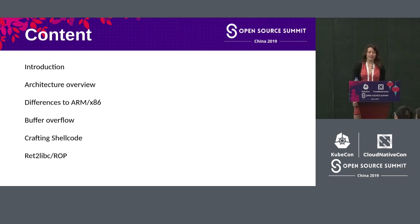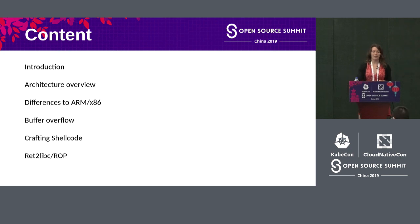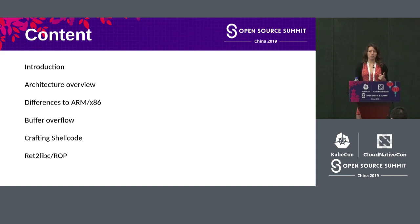Here's what I'll be covering. After the introduction I'll give you an architectural overview of RISC-V and explain the differences to ARM and x86. Then we'll dive into hands-on examples: how to exploit a buffer overflow, how to write your own shellcode for RISC-V, and how to perform ret-to-libc. I hope all those terms will make more sense once this presentation is over.